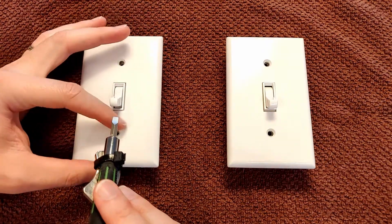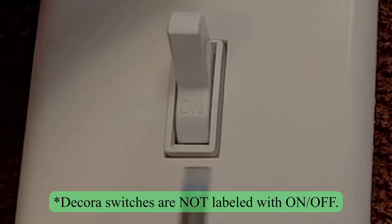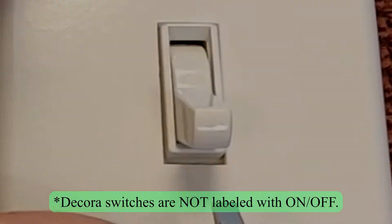If you still have a cover plate on, you can tell because the single-pole switch will have on and off written on it whereas the three-way switch will not.